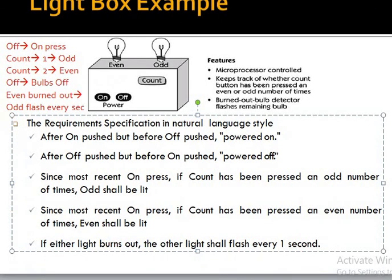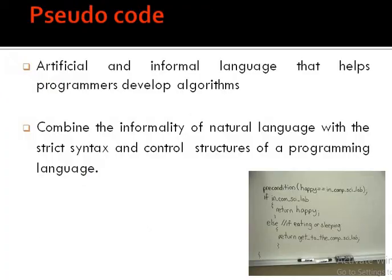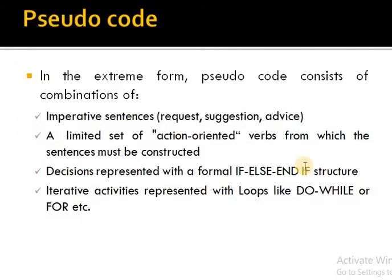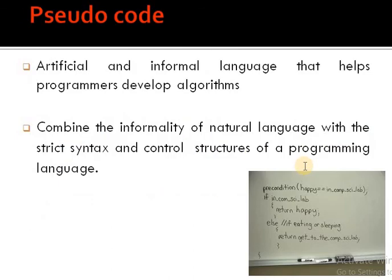Now we will design this logic with the help of technical methods. The first technical method we are studying is pseudocode. Pseudocode means partial code — 'pseudo' means partial. This is a way to represent your logic, your program, your requirements, in which we do not write actual code. It is a combination — a partial coding — that is a combination of strict syntax plus natural language. We call it a sort of informal language.